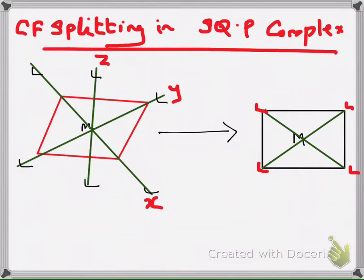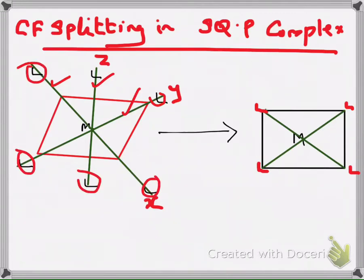On the left side, you can see an octahedral complex having 6 ligands through 3 axes: x, y, and z respectively. You can see all 6 ligands coming towards the central metal and keeping a particular distance from the metal, which we call the bond length.